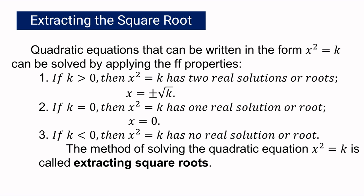Property 1: If k is greater than 0, then x squared equals k has two real solutions or roots. Thus, x is equal to positive or negative square root of k. Property 2: If k is equal to 0, then x squared equals k has one real solution or root. Thus, x is equal to 0.